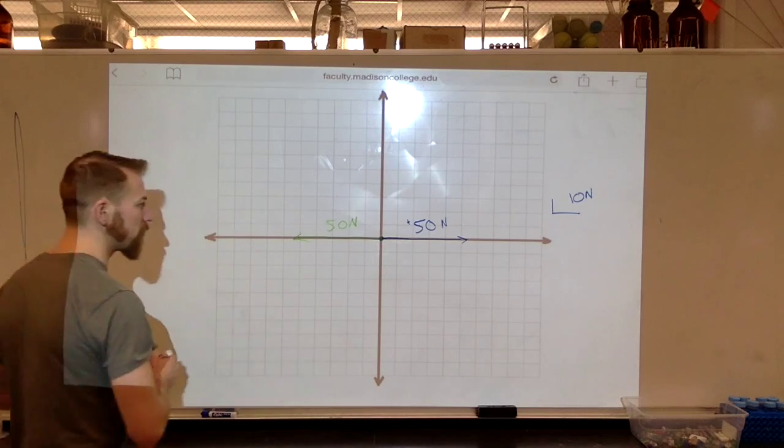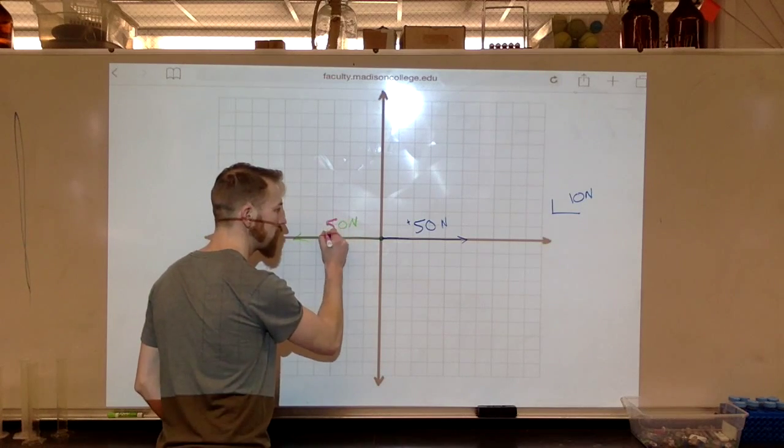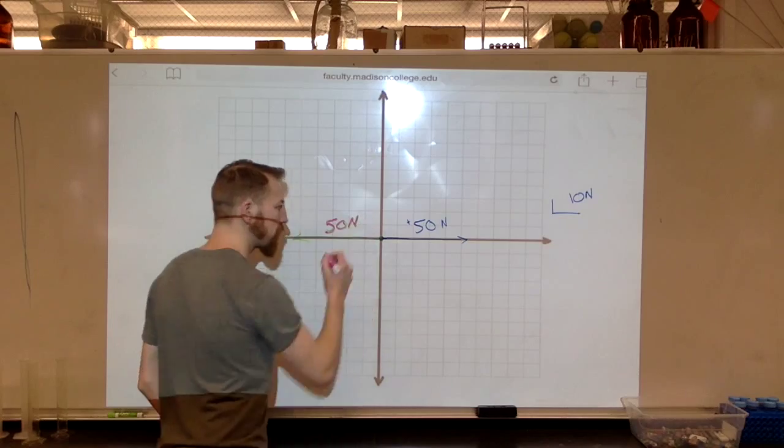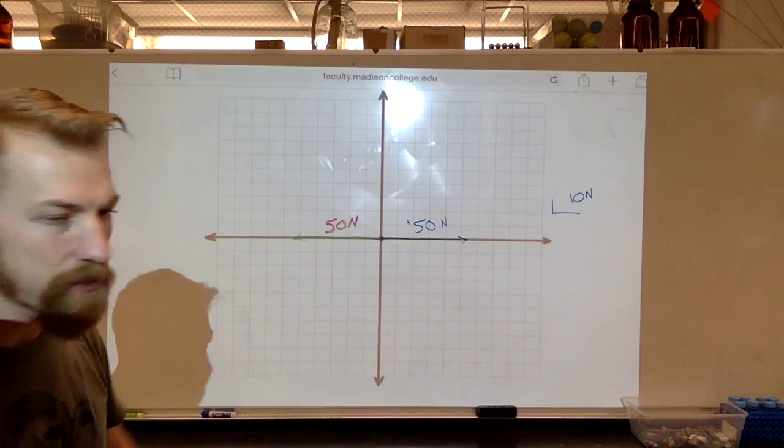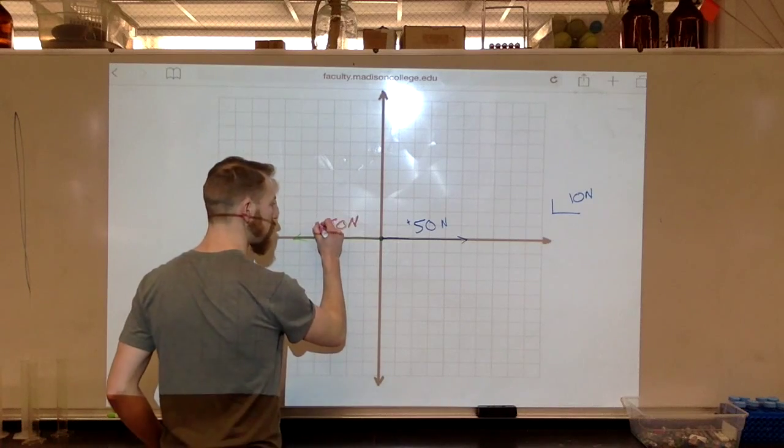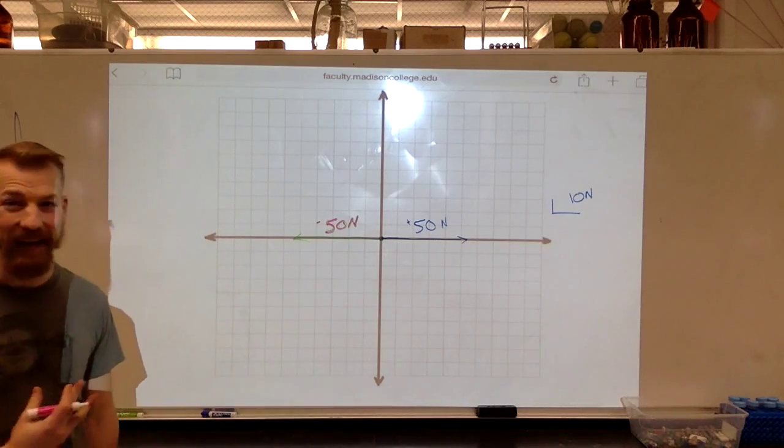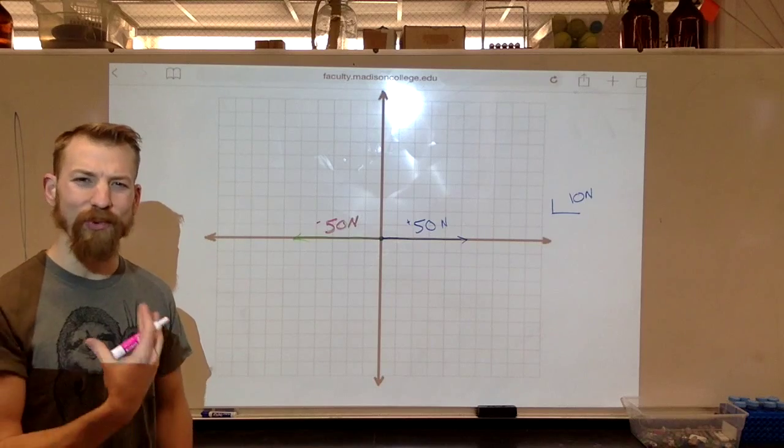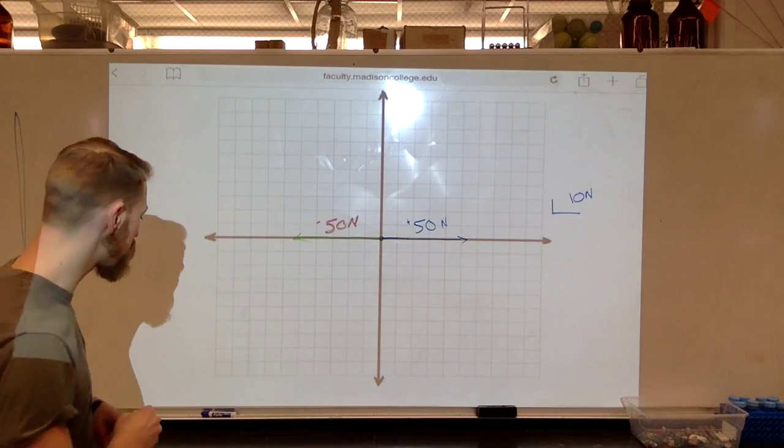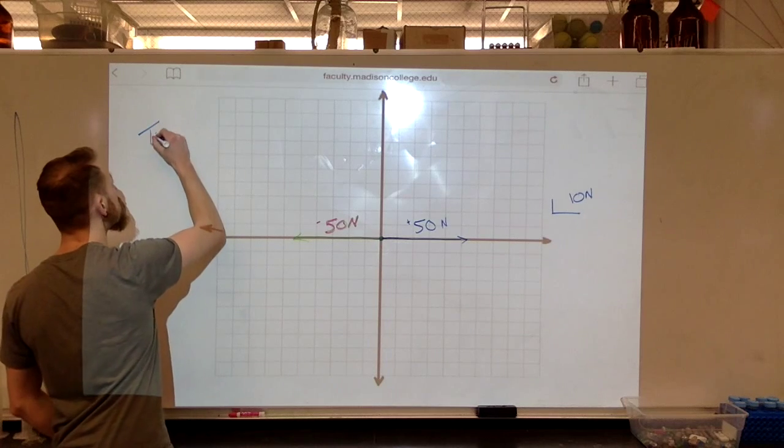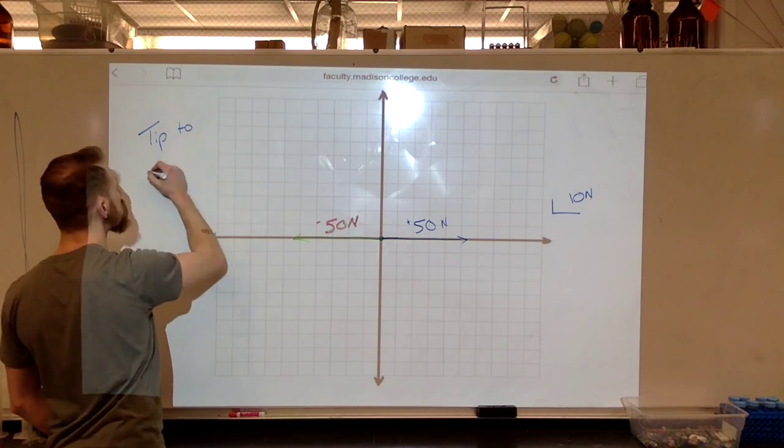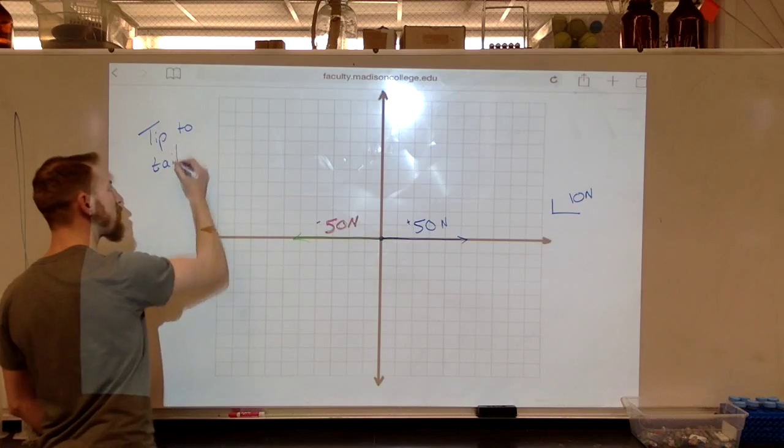I don't know if you guys can see that all right. Let's make it pink maybe. It shows up a little bit better. Yeah, there we go. So Porter had 50 newtons in the positive direction. I was pushing at 50 newtons in the negative direction. And if we want to add these two vectors, we can use this process called tip to tail.